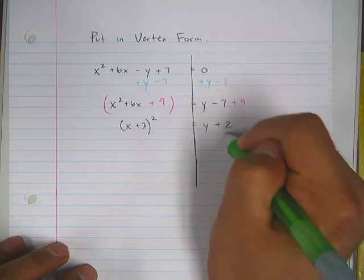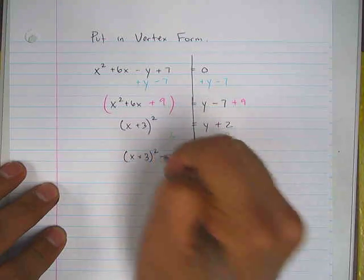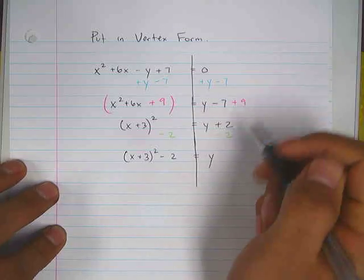Now I can solve for y. Get y by itself by subtracting 2, subtracting 2. Throw it in the back. x plus 3 squared minus 2 equals y.